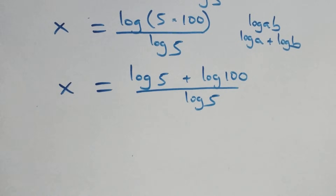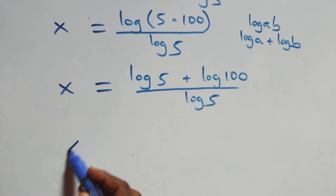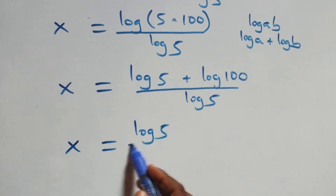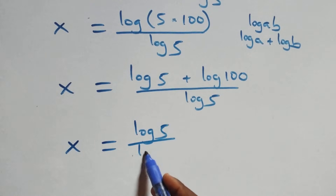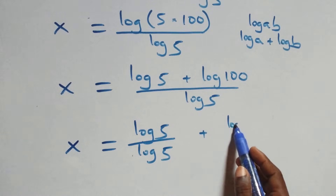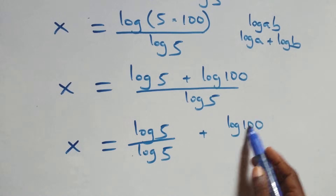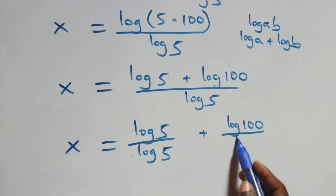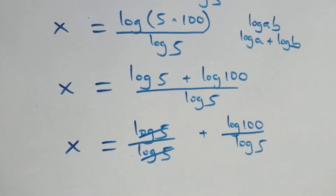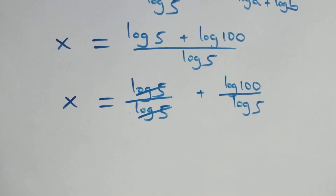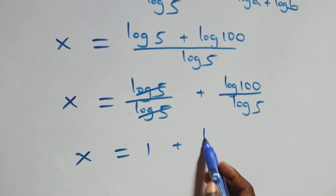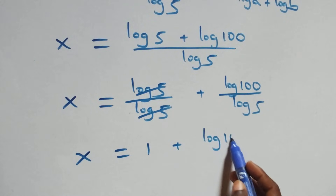We separate these into two fractions. This becomes x equals to log 5 over log 5 plus log 100 over log 5. This becomes x equals to 1 plus log 100 over log 5.